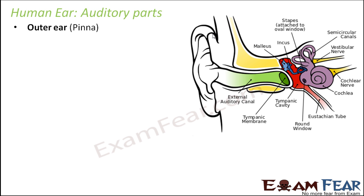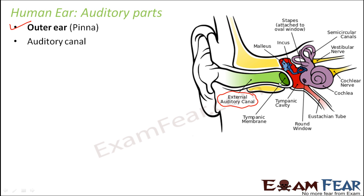The outer ear is the part we can see from outside, also called the pinna. From the outer ear starts the auditory canal — a tube-like structure that goes deep inside. If you put your little finger inside your ear you can feel a tunnel-like passage. That is where the auditory canal starts, and it goes deep inside reaching the eardrum.